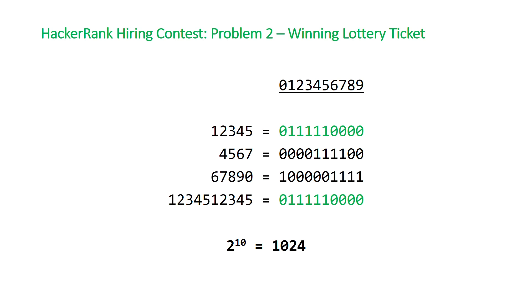If we do 1024 squared for our quadratic algorithm, that's roughly a million, and a million operations won't exceed our time limit. So let's take a look at the code.